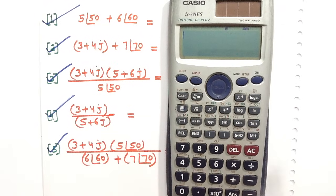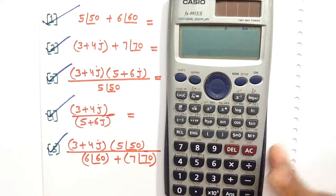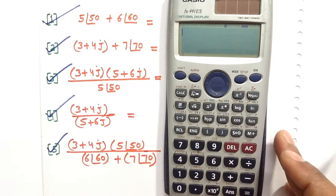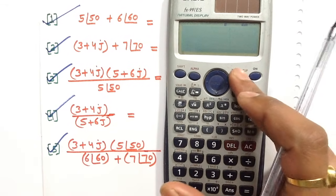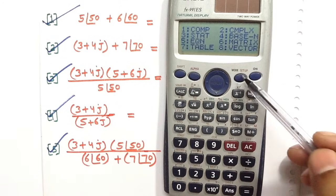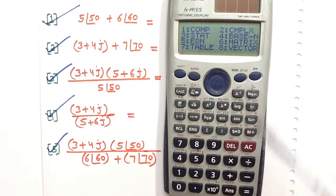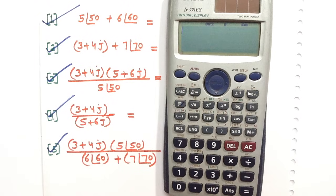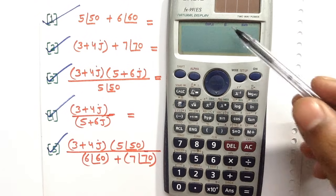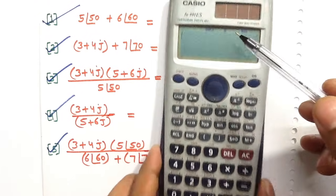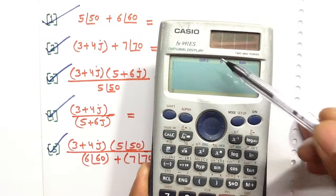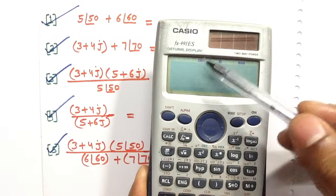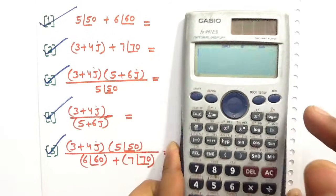Before solving these problems, set the mode of the calculator to complex. Press the mode button, then press the corresponding button. You can see the calculator is now working in complex mode — 'complex' is written on the screen.